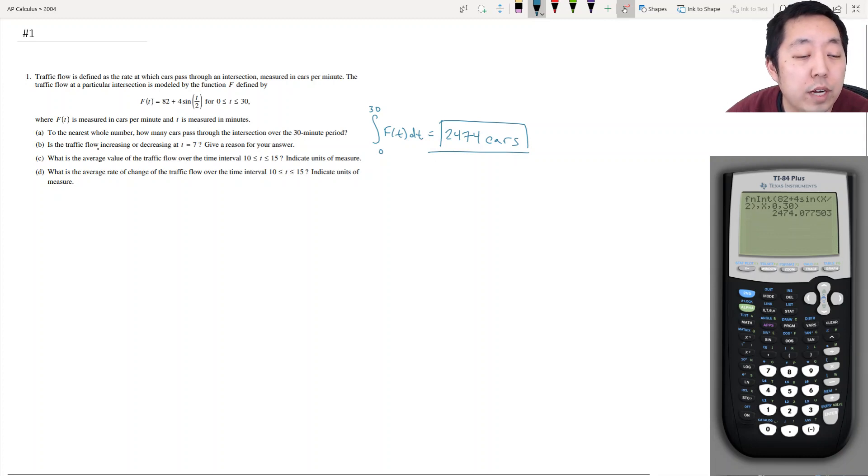Part B: Is the traffic flow increasing or decreasing? Well, traffic flow is f, so to know if traffic flow is increasing or decreasing, I need to know the derivative at t equals 7.